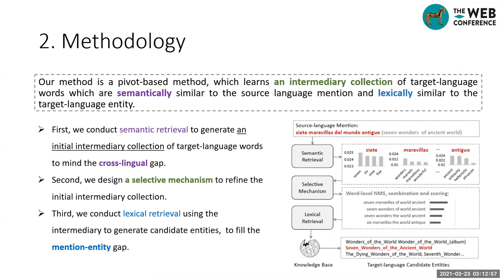Our method is a keyword-based method. We learn a set of English words as keywords. These keywords are semantically related to the mention and lexically related to the entity. There are three components in our method. First, we leverage bilingual word representations to generate an initial intermediary collection, targeted at the cross-lingual gap, using only a small dictionary. Second, we design a selective mechanism to refine keywords to improve its ability to connect the source language mention and target language entity. Third, we use keywords as queries and conduct lexical retrieval on the whole knowledge base to bridge the gap between mention and entity.